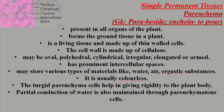Parenchyma cells are present in all organs of the plant body and they form the ground tissue. Ground tissue is the portion occupied by parenchyma cells found below the hypodermis, and within the ground tissue the vascular bundles are scattered or embedded.